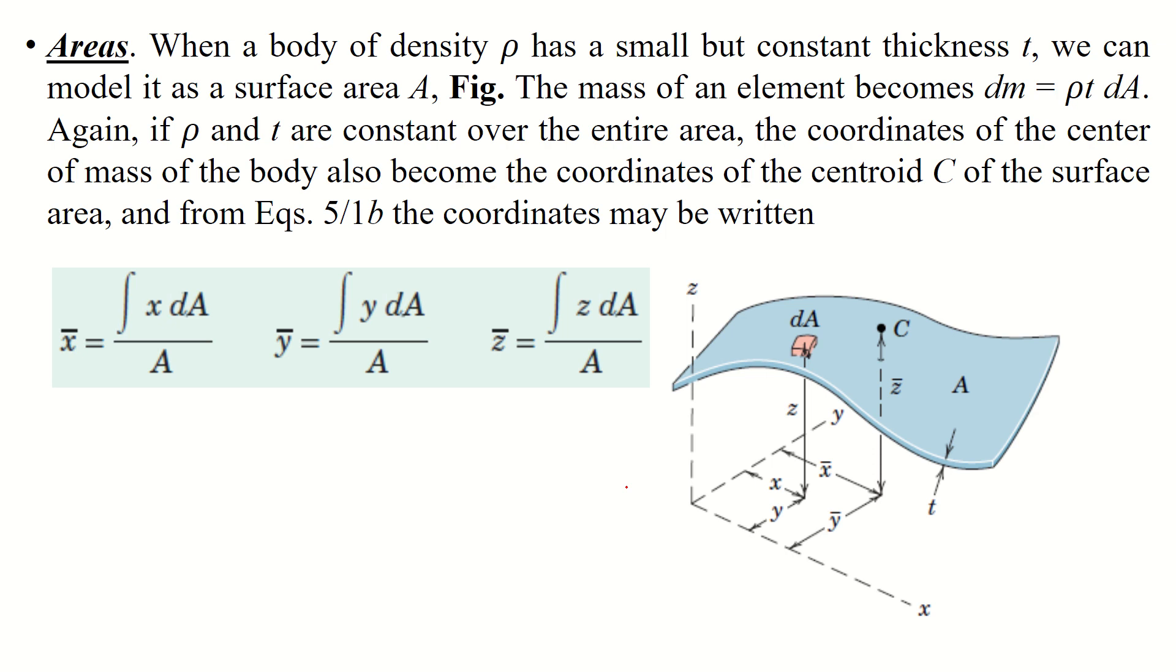To find the centroid of this particular area: x times small area A rotating about the y-axis, then y times A rotating about the x-axis, and z times A rotating about the corresponding z-axis will give you a small moment of that particular mass. Adding all these masses will give you the centroid based on that particular axis.